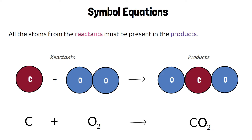To check this is balanced, I need to count the atoms of each element in the reactants and products. I have one carbon in the reactants and one carbon in the products, which is balanced. I have two oxygens in the reactants and also two oxygens in the products, so this equation is balanced.